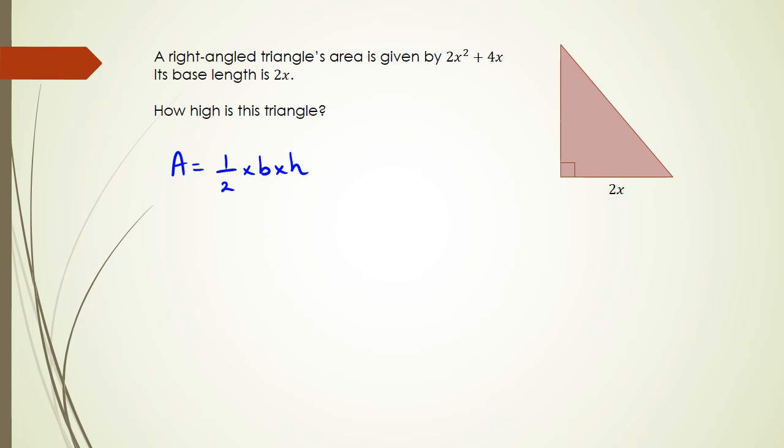The first method I'm going to do is: area is 2x² + 4x, and I know what the base is. The base is 2 times x multiplied by the height. This is the generic idea. From here there's two ways of actually solving this.